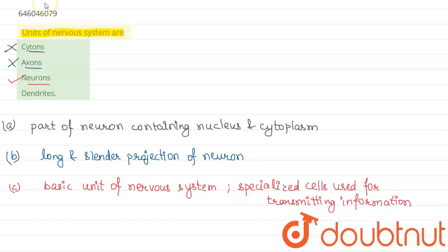Coming to the fourth option which is the dendrites. Dendrites are a branched extension of the nerve cell, i.e. neuron. They are branched extensions of the neuron or the nerve cell. So this option is also wrong.